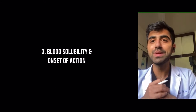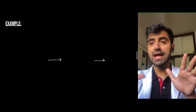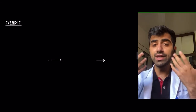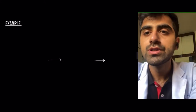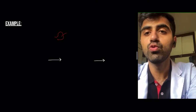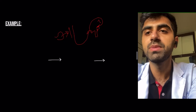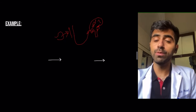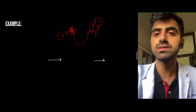Now, blood solubility and onset of action. When you inhale an anesthetic, it moves from your alveoli into your blood, and from the blood you want it to go to your brain. Blood solubility means how soluble the drug is in the blood compartment. Here's an analogy: suppose you ask your brother to deliver a PlayStation to your friend, but your brother is a huge fan of PlayStation and wants to hold onto it for a day before delivering it.